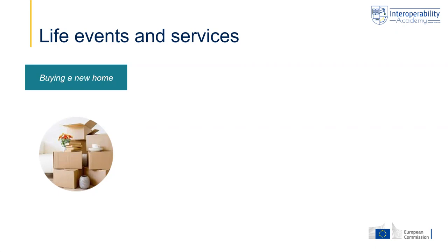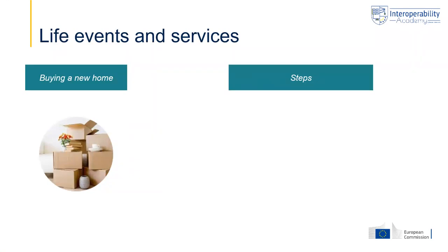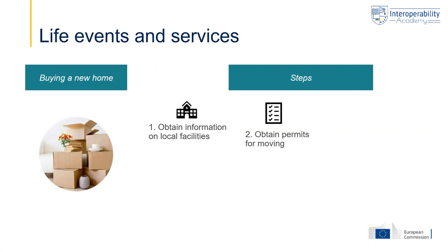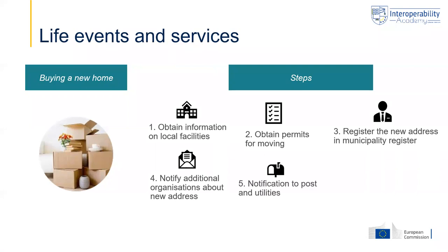Let us go back to the example of Anna, who was looking at a certain stage for another house. She was thinking of buying a new house, which means she had to go through different steps and rely on different types of services. When deciding to move to another place, she assessed what online information was available — for instance, on local schools and local amenities in the area. She also had to obtain permits for construction work and receive permission to live there, register a new address with the municipality, provide information about the new address to the post office and utilities, and finally sign out of the municipality register of her old municipality.